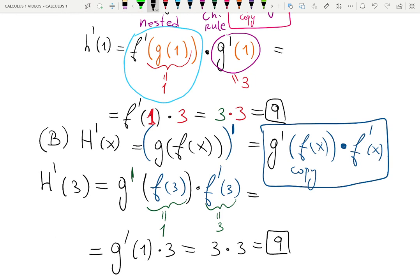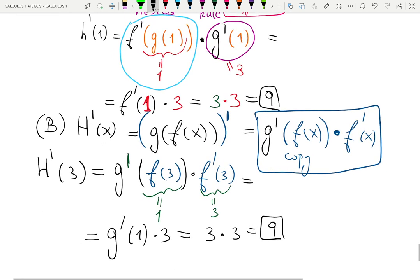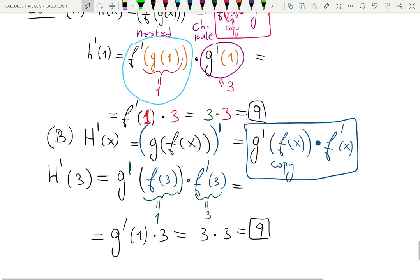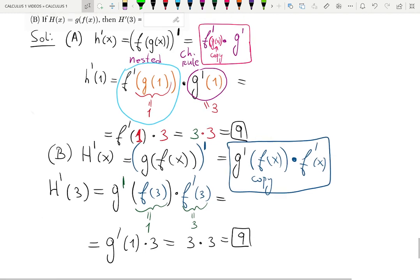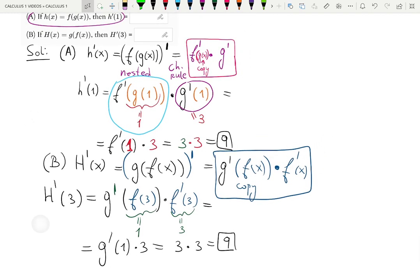3 times 3 is 9. You can imagine I have facepalm right now. Because even the answer is the same. Well, that might not be coincidence. Because for some functions, that is true. That you can exchange the order of nesting. And the answer will be the same.